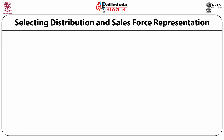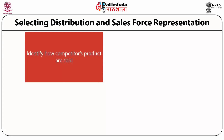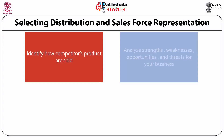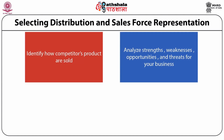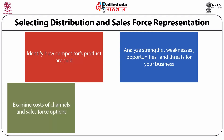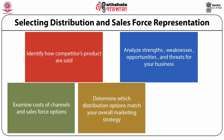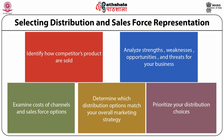In selecting distribution and sales representation, you should identify how competitors' products are sold, analyze trends, weaknesses, opportunities, and threats for your business, examine the cost of channels and sales force options, determine which distribution options match your overall marketing strategy, and prioritize your distribution choices. These are some of the key techniques which can be used for selecting distribution and sales force representation.